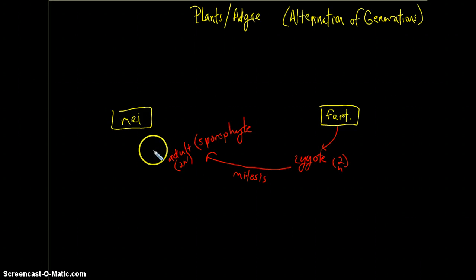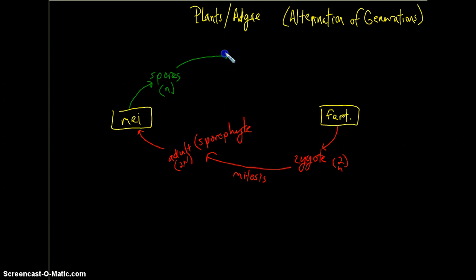Now, a portion of this diploid adult or one specific segment of the diploid adult is going to undergo meiosis and create haploid spores. Now, this is what is released on the underside of ferns.